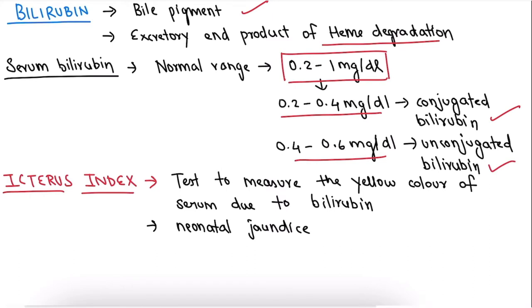Moving on to the Icterus index. It is a test to measure the yellow color of serum due to bilirubin. It was previously used to identify neonatal jaundice, but it is not used nowadays.